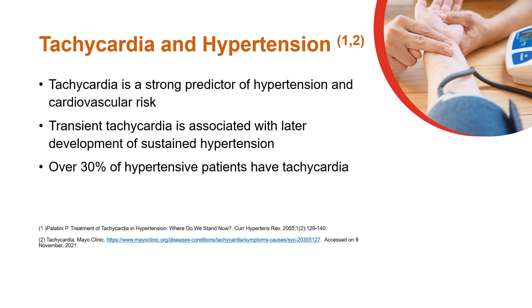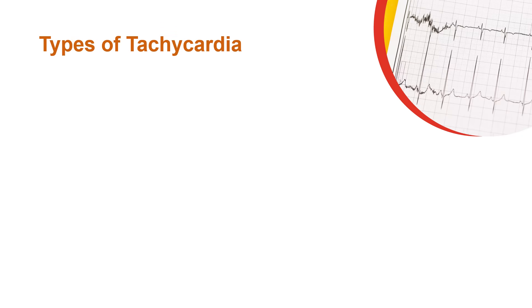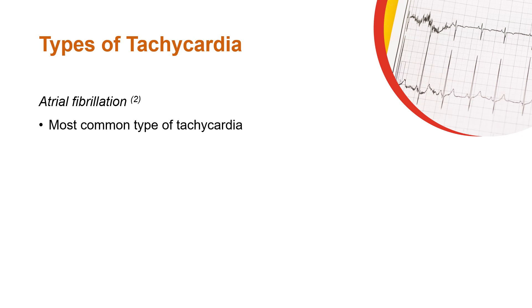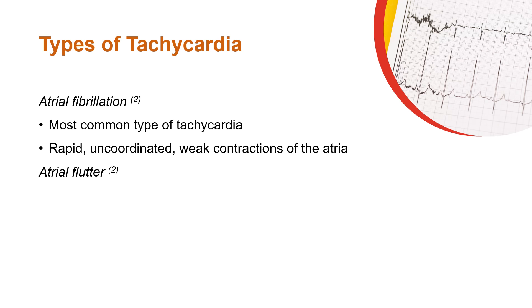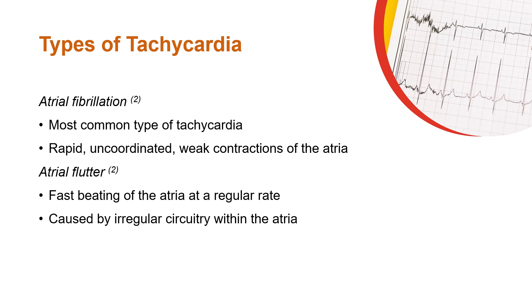The different types of tachycardia are based on the specific part of the heart causing a fast heart rate. Atrial fibrillation is the most common type of tachycardia, causing rapid, uncoordinated, and weak contractions of the atria.